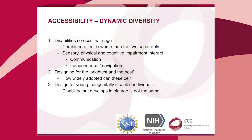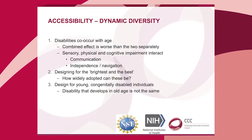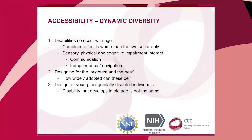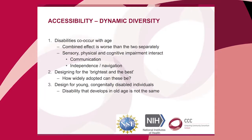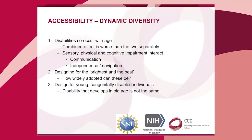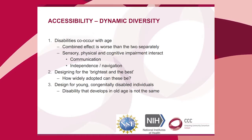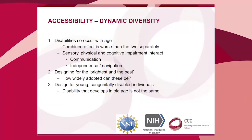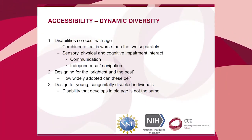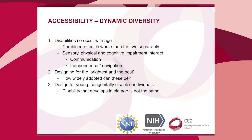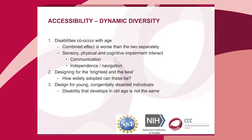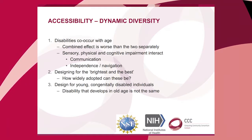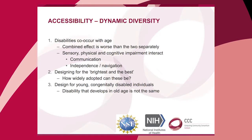Another issue in accessibility research is what I call designing for the brightest and the best. There's a tendency to study very bright college students who have a vision or hearing loss, and systems are designed for that group. As accessibility researchers, we need to study a much wider range of the population — not just those with IQs of 130 or 140. We also tend to study people with congenital disabilities, but for older populations many people develop disability later in life.